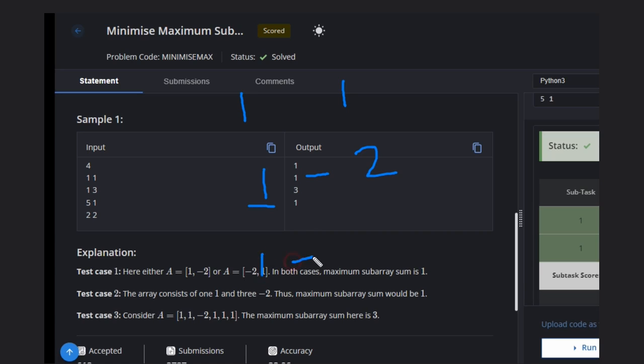In the second case we have 1, -2, -2, -2. Like whatever position we decide for 1, it will be 1 only. The maximum subarray sum possible is 1 because others will be minus.